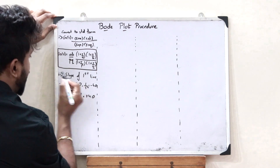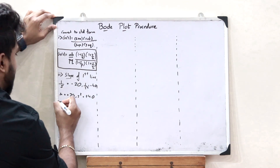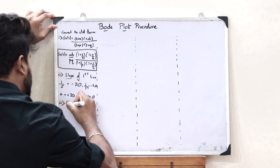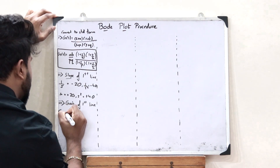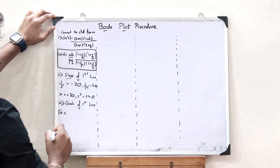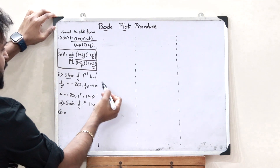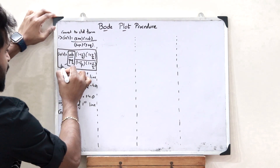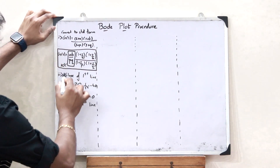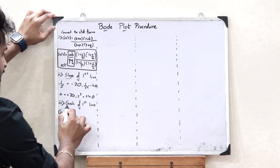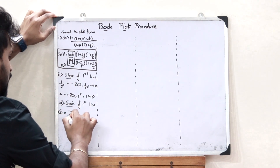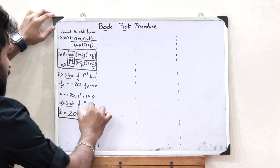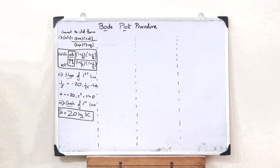The third step is to find the gain of the first line. The gain of the first line is given as G = 20 log K, where K is the constant term AB/PQ in the standard form. This is the gain of the first line of the Bode plot.